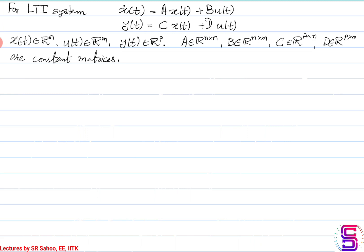Consider this LTI system where x is the state vector, y is the output, u is the input with m inputs, p outputs, and this is the nth order system. A, B, C, D are constant real matrices of appropriate size.